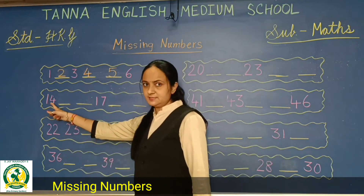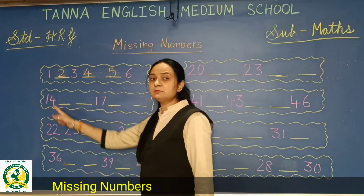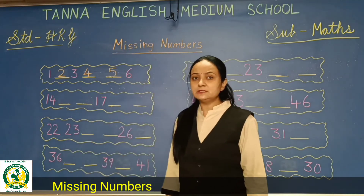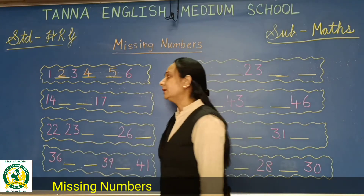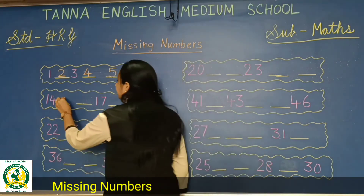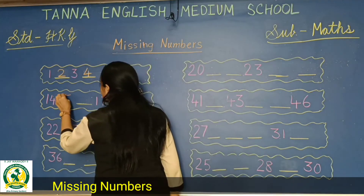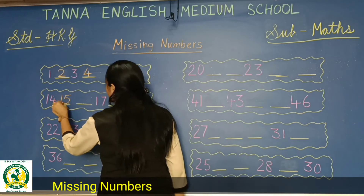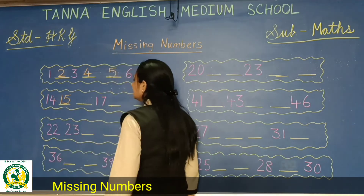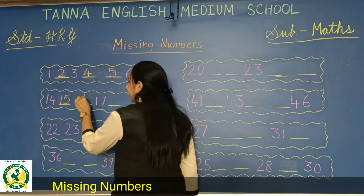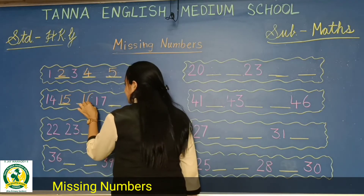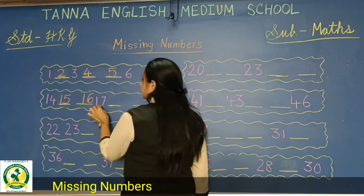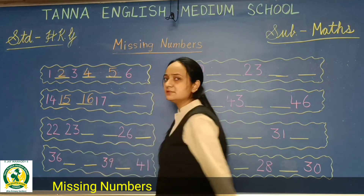Now see here, 14 is written. So what will come after 14? 15. So write here 15. Then 16. Then 17 is written.